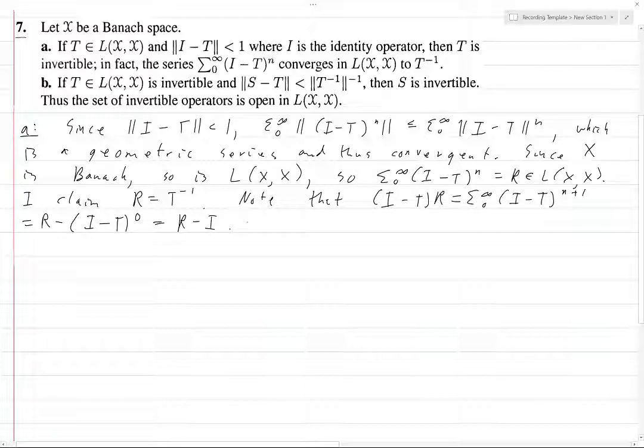So (I minus T)R equals R minus I. If you evaluate this, this is just R minus TR. So R minus TR equals R minus I. And so if you get rid of the R's, you get TR equals I. And hence R equals T inverse. So that's part a.